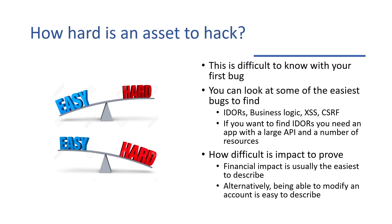Financial impact is usually the easiest to describe — it's very easy to convince somebody that they're doing something wrong if they lose money. For more security-focused stuff, we have being able to modify an account, being able to log in as somebody else, being able to change something about someone else's account without them knowing. So as you're looking at assets, keep in mind: can I find the bugs I know how to find, and can I prove impact if I find one? Those are the two considerations. You may not be able to tell how easy or difficult a target is before you really get started.